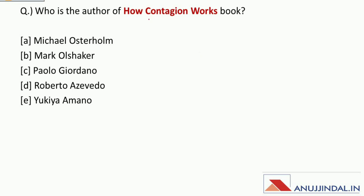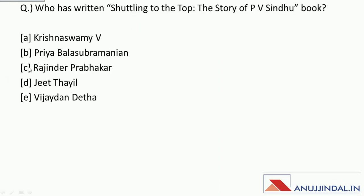Who is the author of the book 'How Contagion Works'? 'How Contagion Works' has been written by Paolo Giordano. Who has written 'Shuttling to the Top: The Story of P.V. Sindhu'? It has been written by Krishnaswami V.